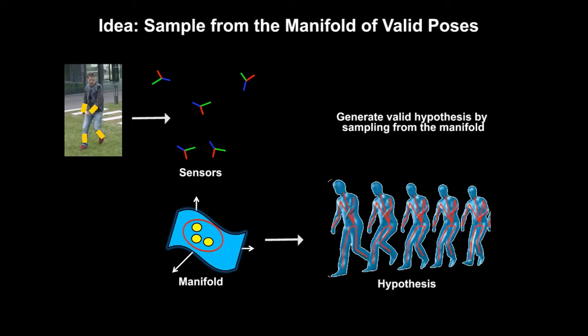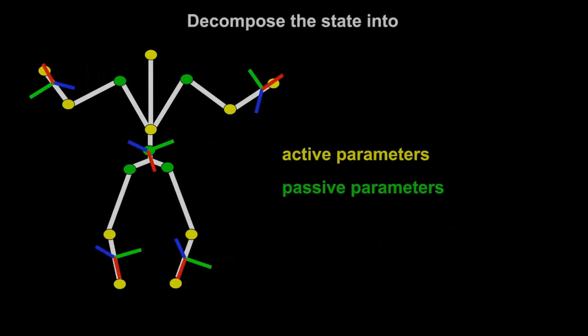in the proposed method the manifold is derived analytically from the measurements during tracking. The pose vector is decomposed into two sets, the active parameters shown in yellow, and the passive parameters shown in green.